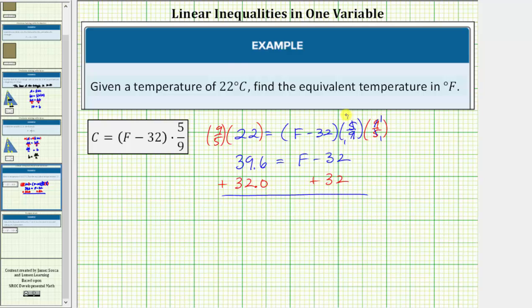Notice on the right side, minus 32 plus 32 is zero, so we have F equals, on the left side, 39.6 plus 32 is equal to 71.6. Which means 22 degrees Celsius is equivalent to 71.6 degrees Fahrenheit.